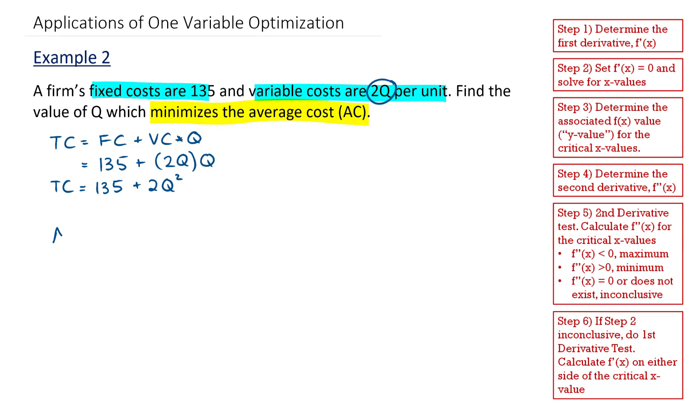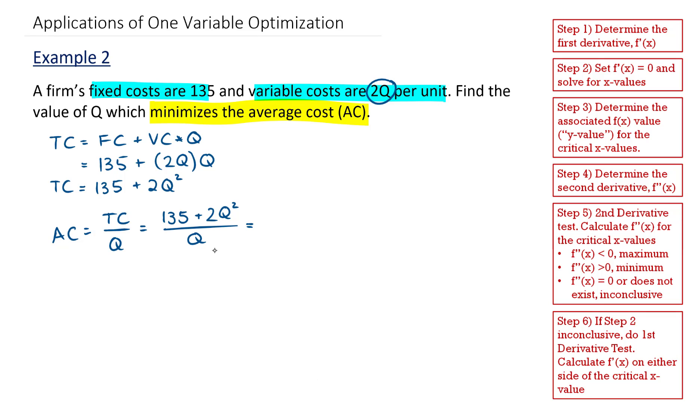To get average cost, I'm going to take my total cost and divide it by the total number produced. So I get 135 plus 2Q squared all over Q. This gives me 135Q to the power of negative 1, or 135 divided by Q, plus 2Q.